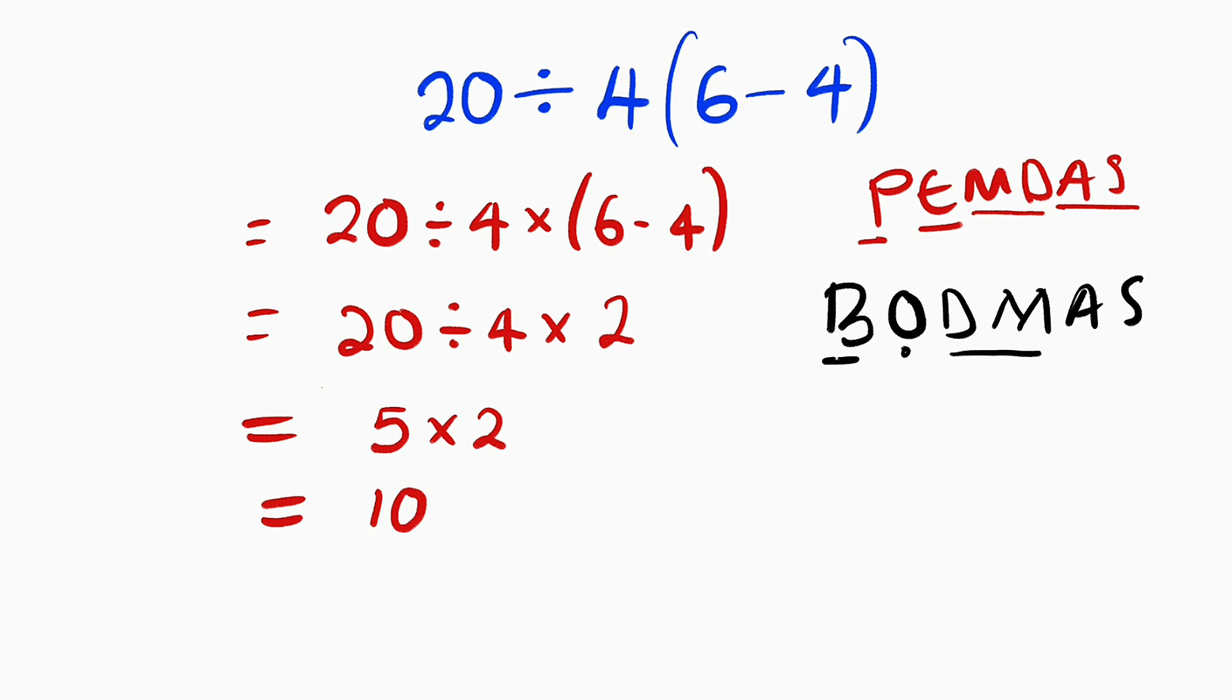Division and multiplication are carried out simultaneously, starting with the one that comes first from left to right. If you can see here, we have multiplication and division. It doesn't matter, you have to start with the one that comes first. We have division before multiplication. Therefore, 20 divided by 4 is 5, and 5 multiplied by 2 is equal to 10.